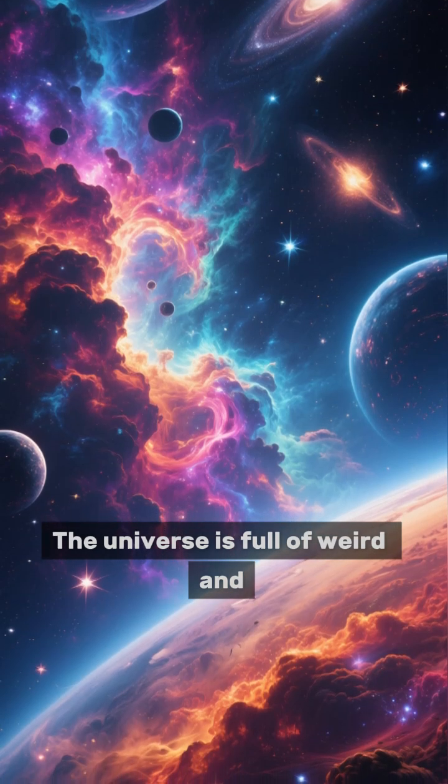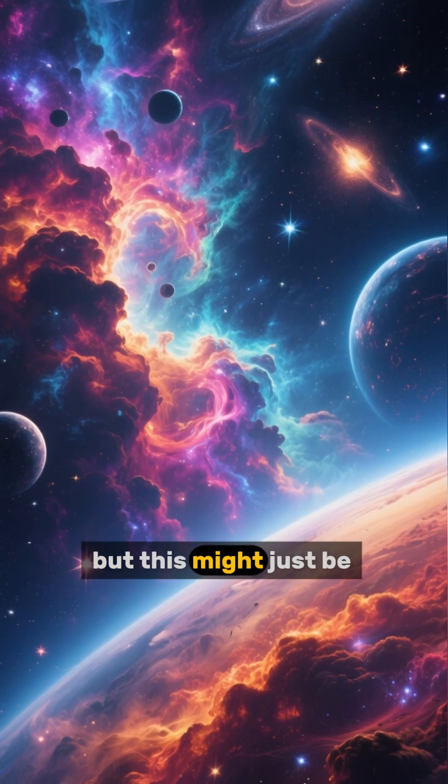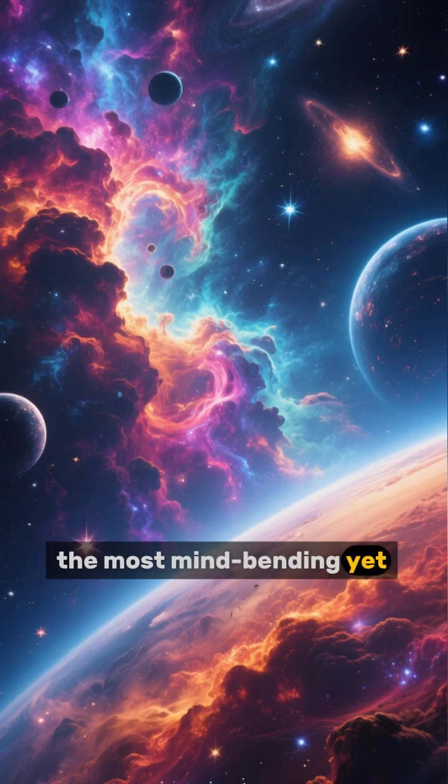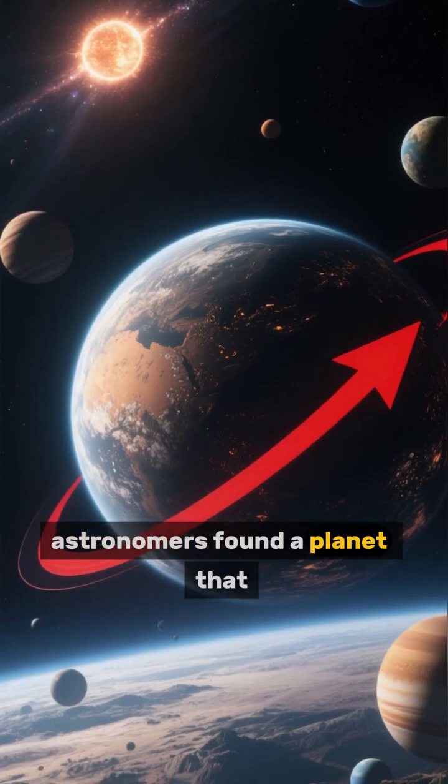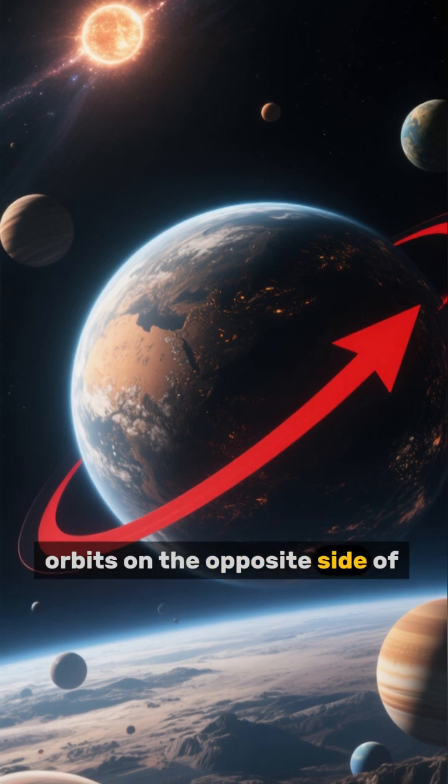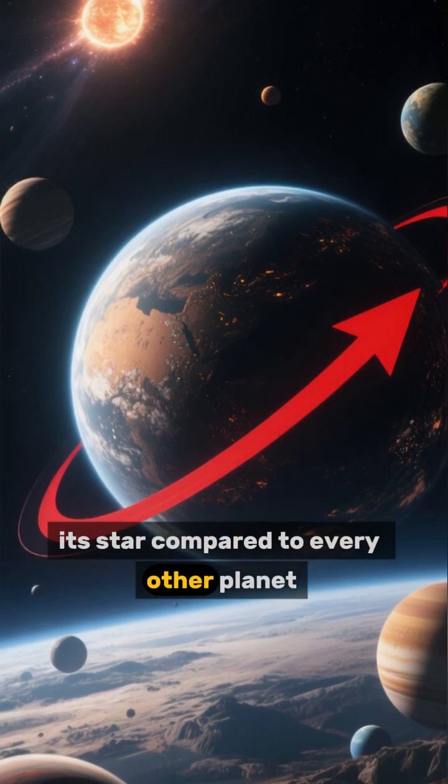The universe is full of weird and wacky things, but this might just be the most mind-bending yet. In 2022, astronomers found a planet that orbits on the opposite side of its star compared to every other planet in the universe.